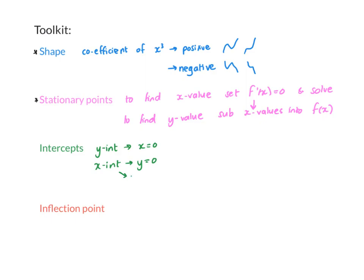In this case, you might need to use the factor theorem to find a factor. Either you need to prove that something is a factor, or you might need to find a factor, or maybe you already have a factor and so you don't need to do this part.